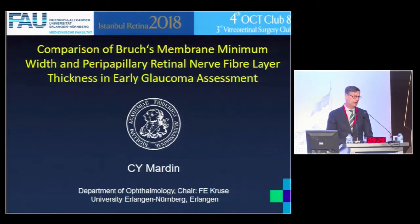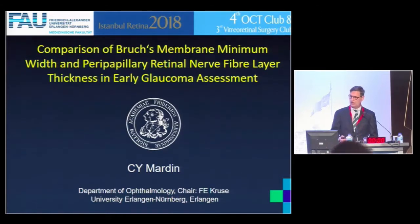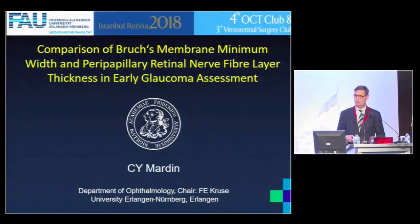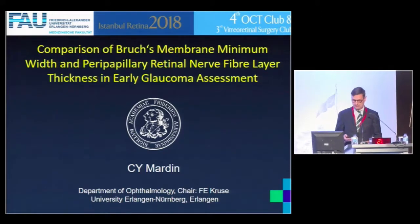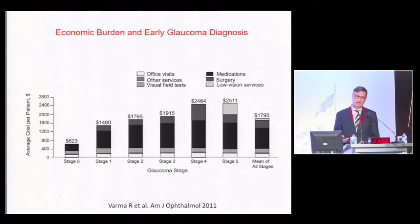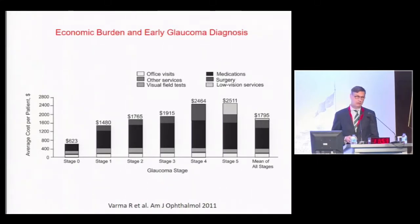As we have heard in the question, we have two glaucoma and optic disc-related measurements in glaucoma: the minimum rim width and the retinal nerve fiber layer. The question is, of course, which is the best? Do they perform the same? How do they do in early glaucoma?